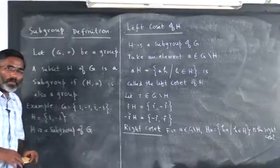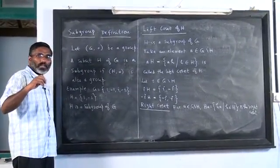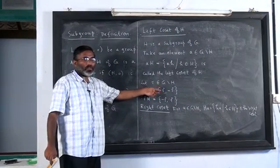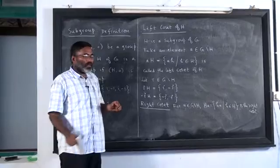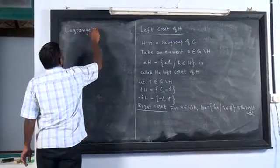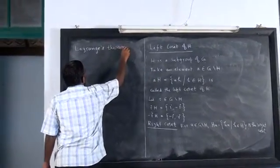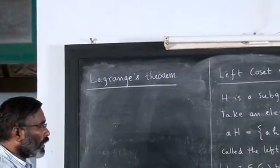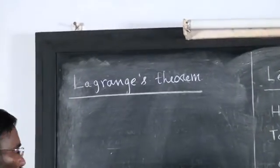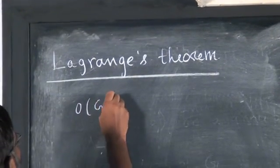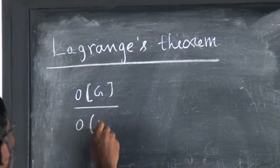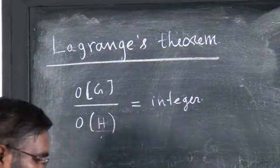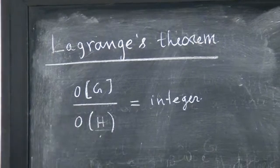Is a coset a group? Is the coset of a subgroup itself a subgroup? No, because there is no identity in general. So a coset is not a subgroup, but it is a set.